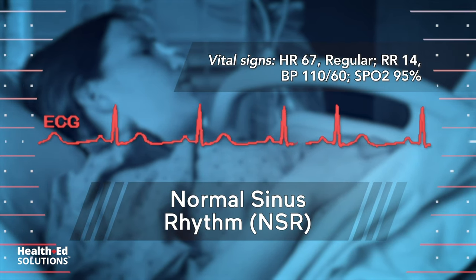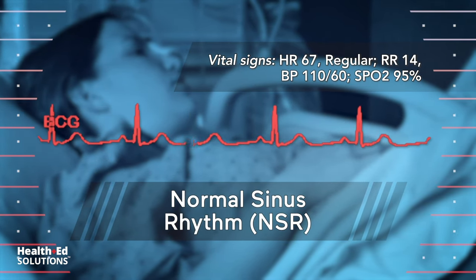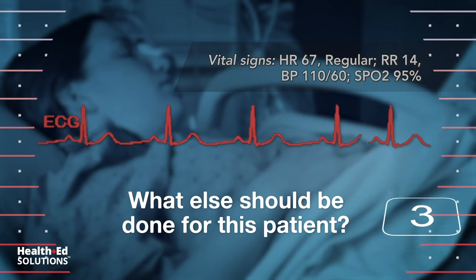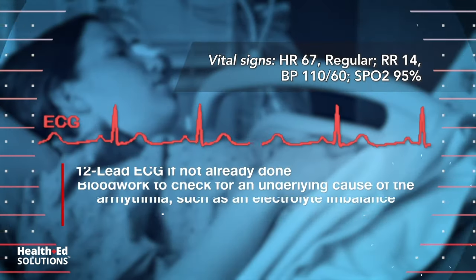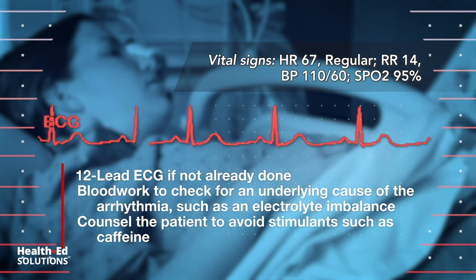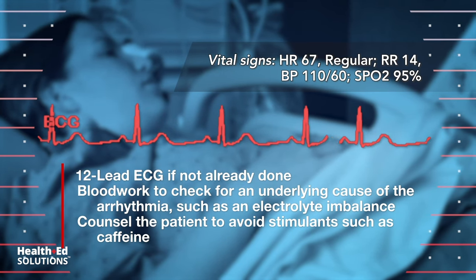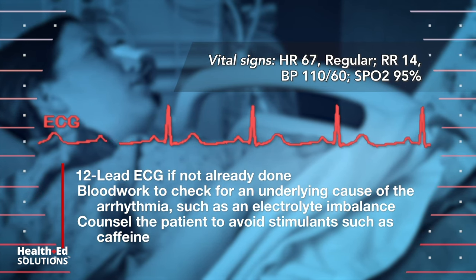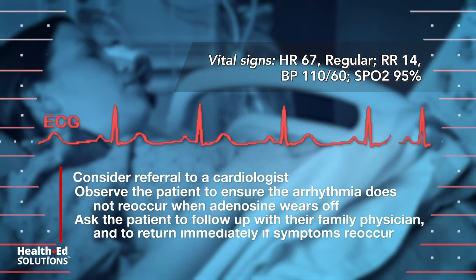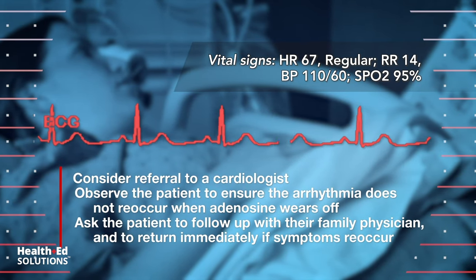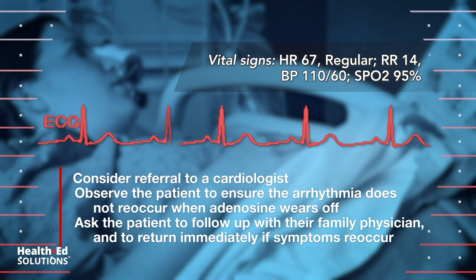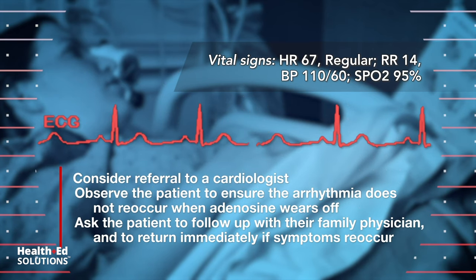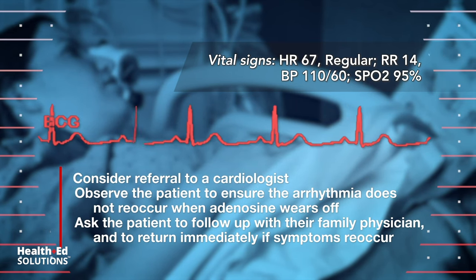Vital signs are stable and the patient states all symptoms have resolved. What else should be done? Obtain a 12-lead ECG if not already done. Draw blood work to check for an underlying cause of the arrhythmia, such as an electrolyte imbalance. Counsel the patient to avoid stimulants such as caffeine, and consider referral to a cardiologist. Observe the patient to ensure the arrhythmia does not reoccur when adenosine wears off, and ask the patient to follow up with their family physician and return immediately if symptoms reoccur.